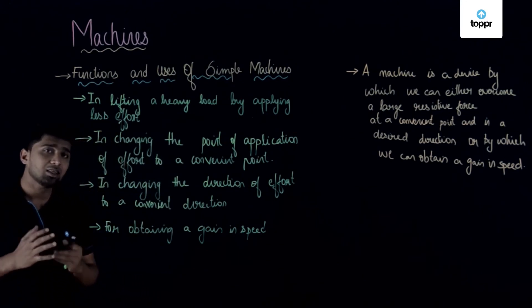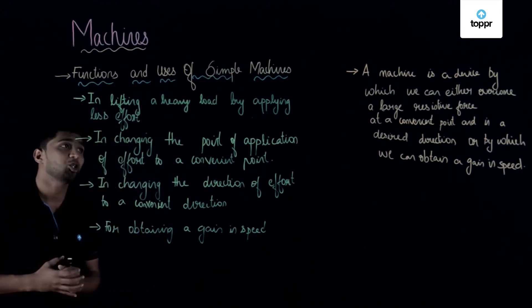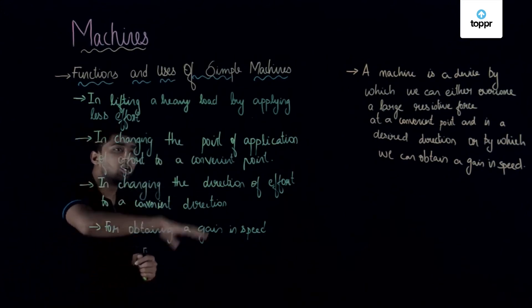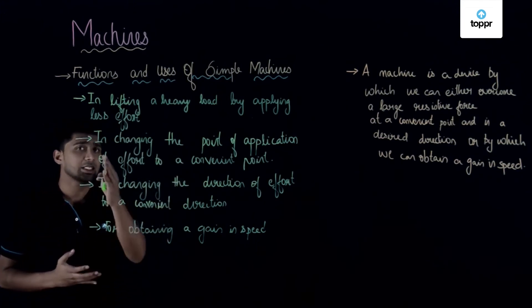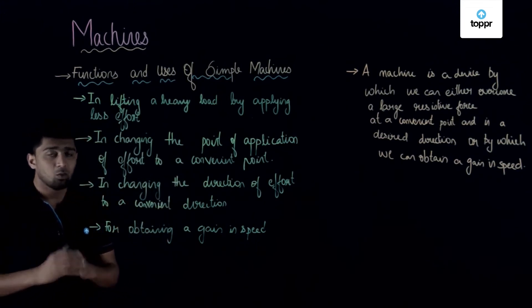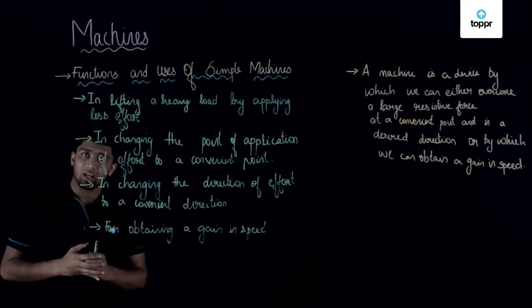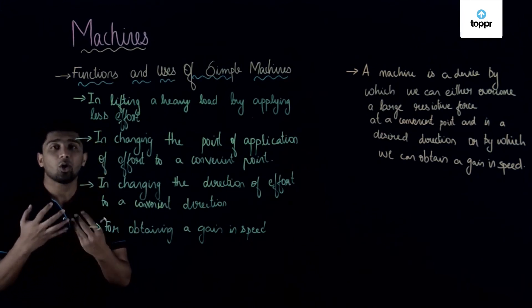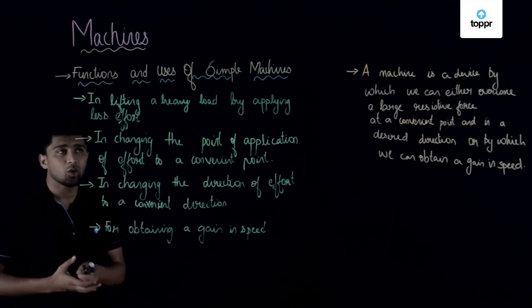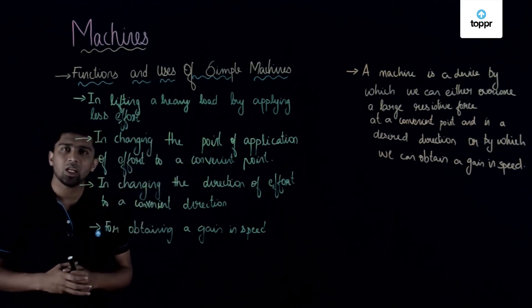Now let's see the second use or function of a simple machine: in changing the point of application of effort to a convenient point. What example can I use here? Drawing a bucket of water from a well. By using a pulley, it will be easier for you to draw that water, which means you are changing the point of application of effort to a convenient point.